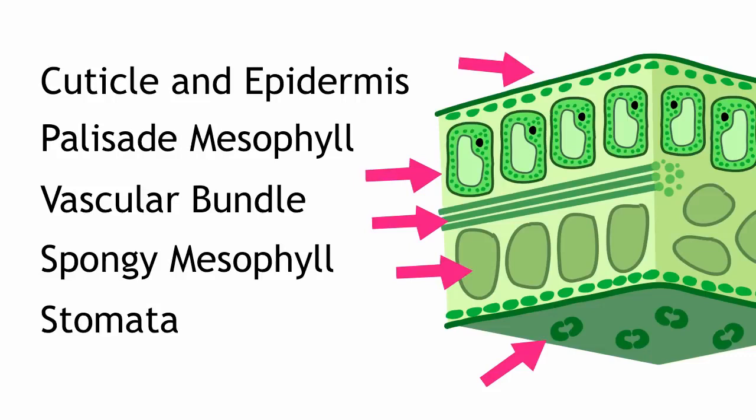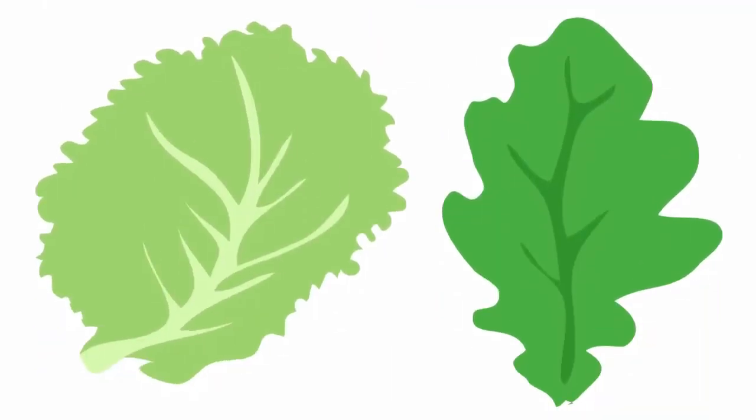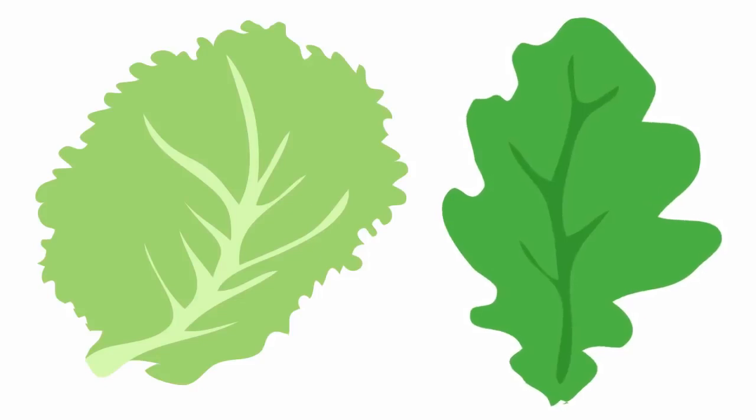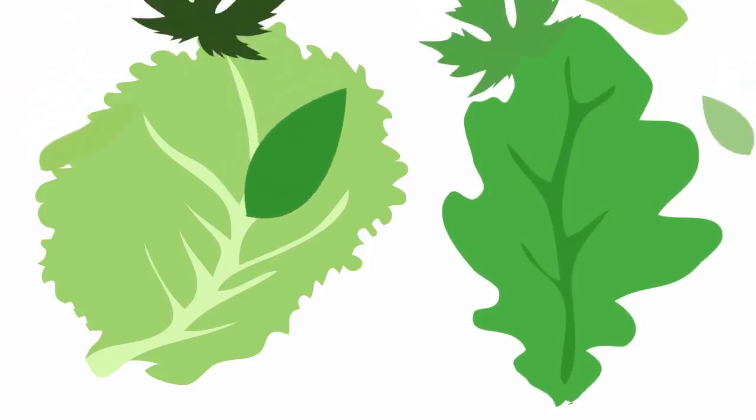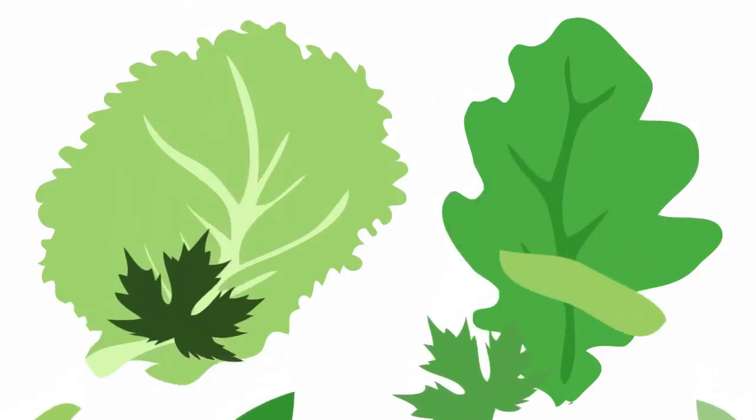Leaves come in all different shapes and sizes. Look at a cabbage leaf and an oak tree leaf. But most of them have these same parts in common, which allow them to get their reactants in and perform photosynthesis.